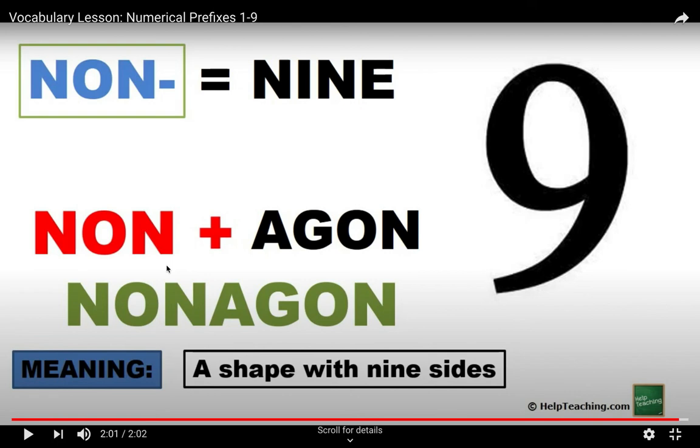So your assignment after watching this video and learning all the prefixes that mean numbers, your assignment is to draw a nonagon, make a shape with nine sides. And thanks for listening.